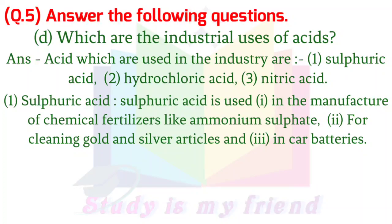Sulphuric acid is used: 1. In the manufacture of chemical fertilizers like ammonium sulfate, 2. For cleaning gold and silver articles, 3. In car batteries.